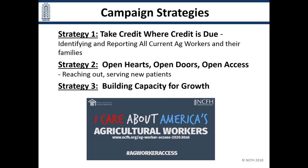The Access 2020 campaign has been underway for two and a half years with three primary strategies. The first, 'credit where credit is due,' focuses on accurately identifying farm workers — which is today's focus. The second, 'open hearts, open doors, and open access,' addresses barriers for uninsured populations and the challenges this year particularly around threats of deportation. The third strategy, building capacity for growth, involves working nationally with the Bureau of Primary Health Care to ensure funding follows increases in population service.